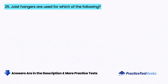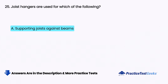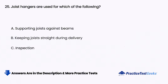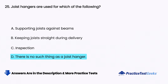Joist hangers are used for which of the following? A. Supporting joists against beams, B. Keeping joists straight during delivery, C. Inspection, D. There is no such thing as a joist hanger.